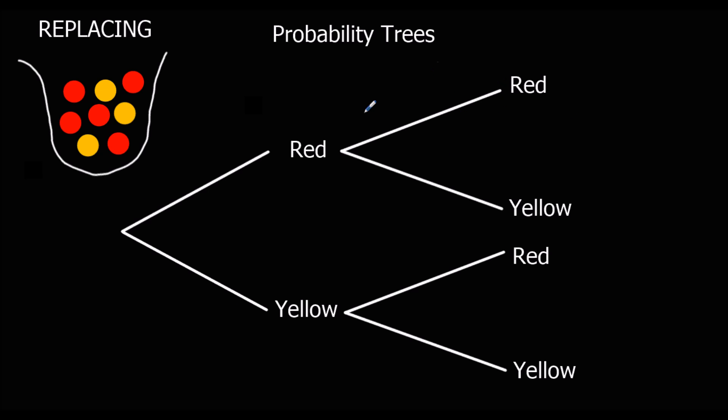What we're going to do here is we're going to pick a marble out of the bag, and then put it back, which is replacing. So we're going to put the marble back, and then we're going to take another second marble from the bag. This probability tree is going to help us work out the probability of the combined event — the probability of getting two reds, two yellows, or a red and a yellow.